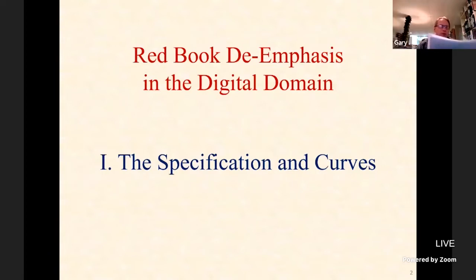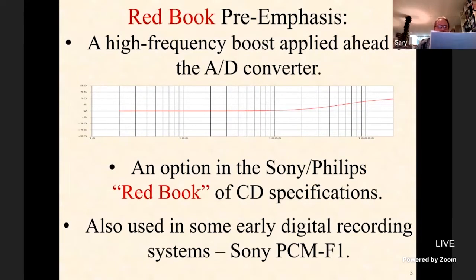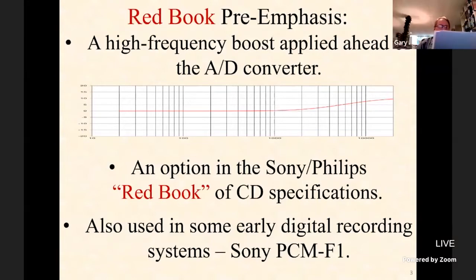As many of you probably know, the so-called Redbook is the book of technical specifications for the compact disc developed jointly by Sony and Philips. Pre-emphasis was a high-frequency boost applied during the record process, ahead of the analog-to-digital converters in early digital recording systems. It was an option in the Sony-Philips Redbook specifications. All of the Denon CDs from the 1980s had pre-emphasis, but very few other CD manufacturers actually implemented it. It was also used in some early digital recorders, notably the Sony PCMF1. I showed last year how the TASCAM DA-3000 digital recorder automatically applied de-emphasis, but if you don't use a DA-3000 for your transfers, you need an accurate method of dealing with de-emphasis on your computer in the digital domain.